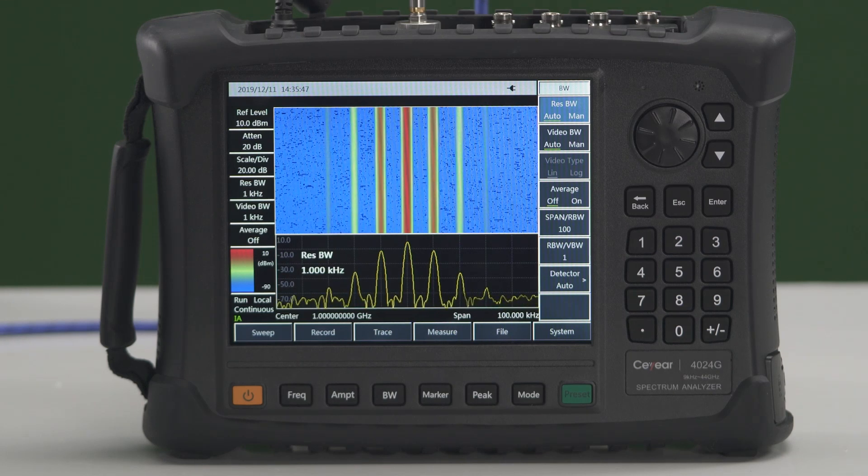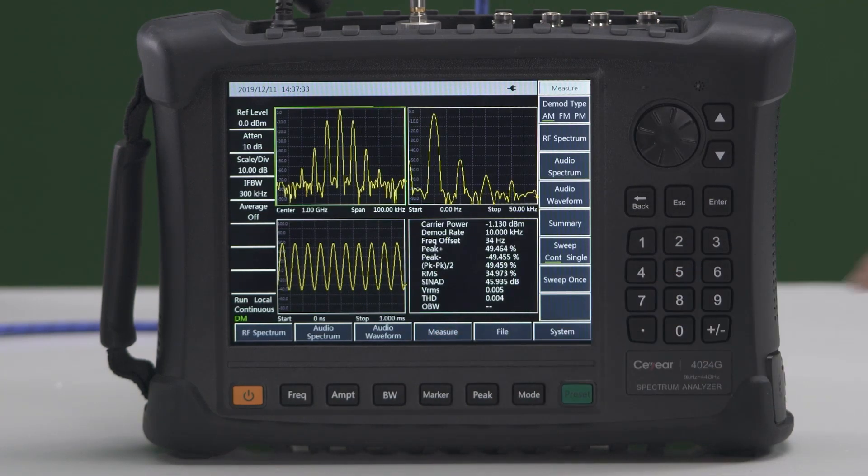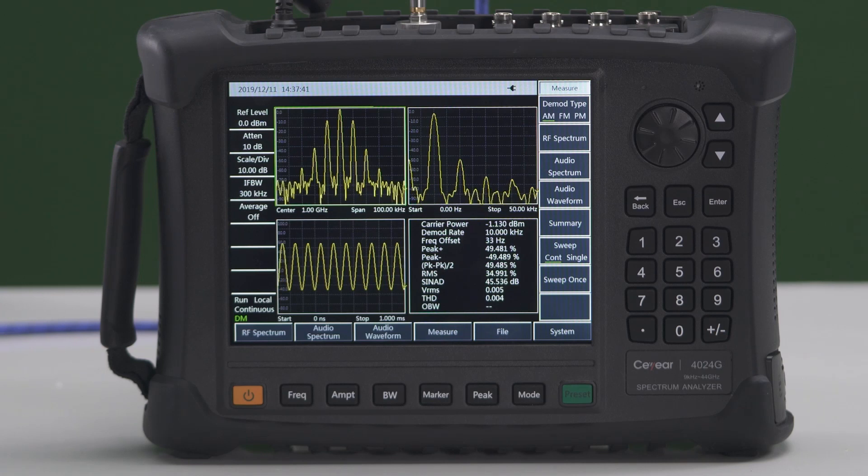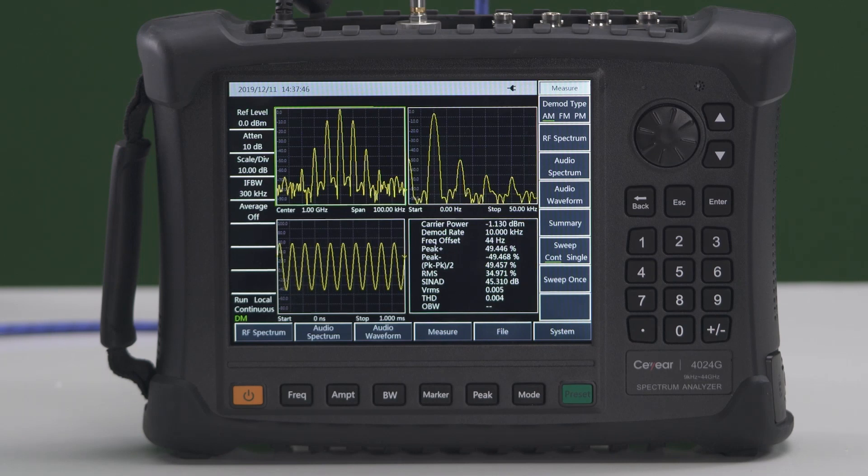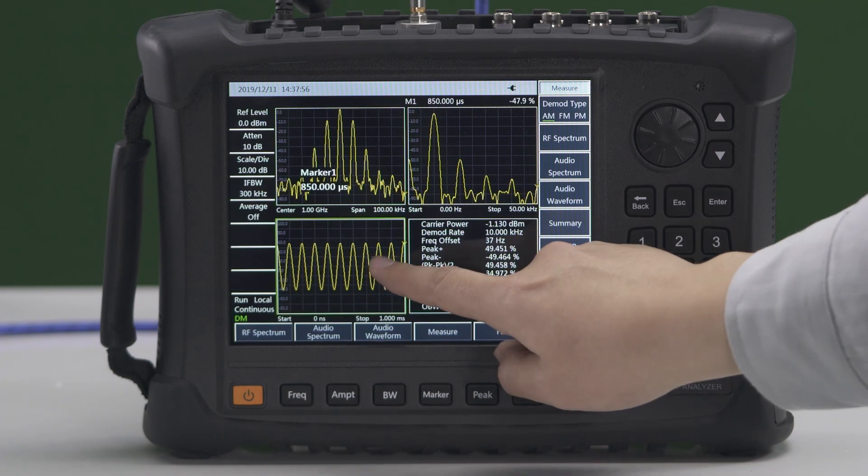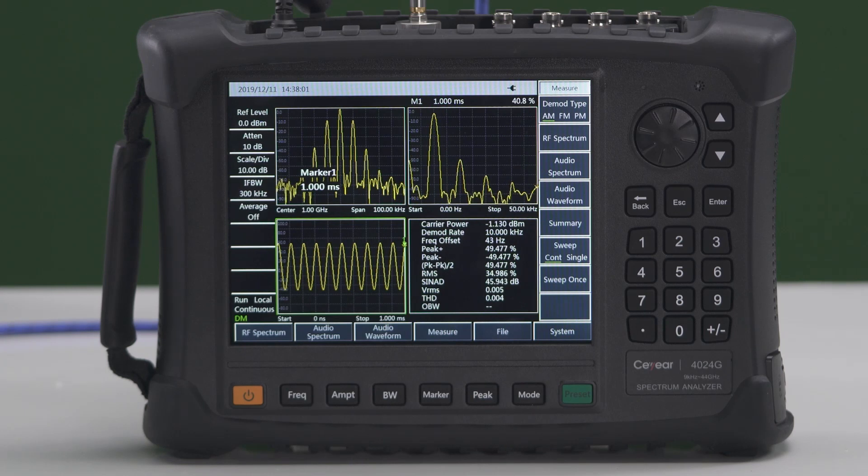In analog demodulation mode, C-Year 4024 can quickly measure and analyze AM, FM, and OM signals. Test items include carrier parameters such as carrier power and carrier frequency offset, modulation parameters such as modulation depth and FM frequency offset, and distortion parameters such as harmonic distortion and signal-to-noise ratio. It can also measure RF spectrum, demodulated audio waveform, and audio spectrum simultaneously. This function can be used for performance measurement of analog modulation and demodulation systems such as broadcasting stations.